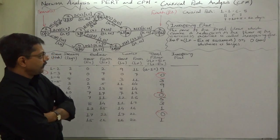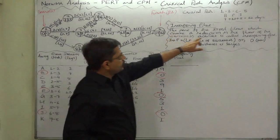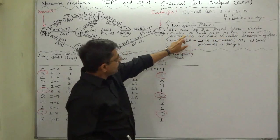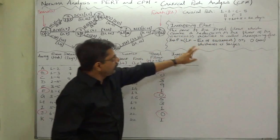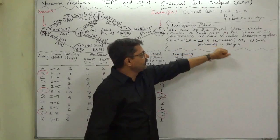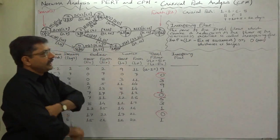What is interfering float? The part of the total float which causes a reduction in the float of the successor activities is called interfering float.